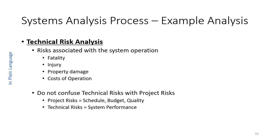Technical risk analysis is very important. It is the risk associated with the operation of the product. Typically we look at a hierarchy of risks: fatality and deaths, followed by injury, followed by property damage, followed by costs of operation. It is very important for system engineers not to confuse technical risks with project risks. Project risks affect schedule, budget, and quality of the product — related to how the project is orchestrated. Technical risks are related to the design of the system and result in system operation performance.